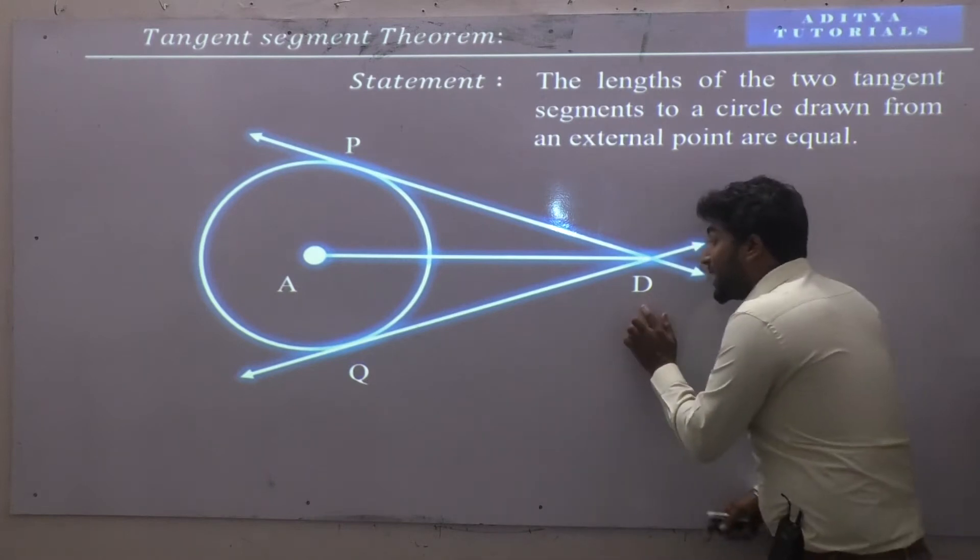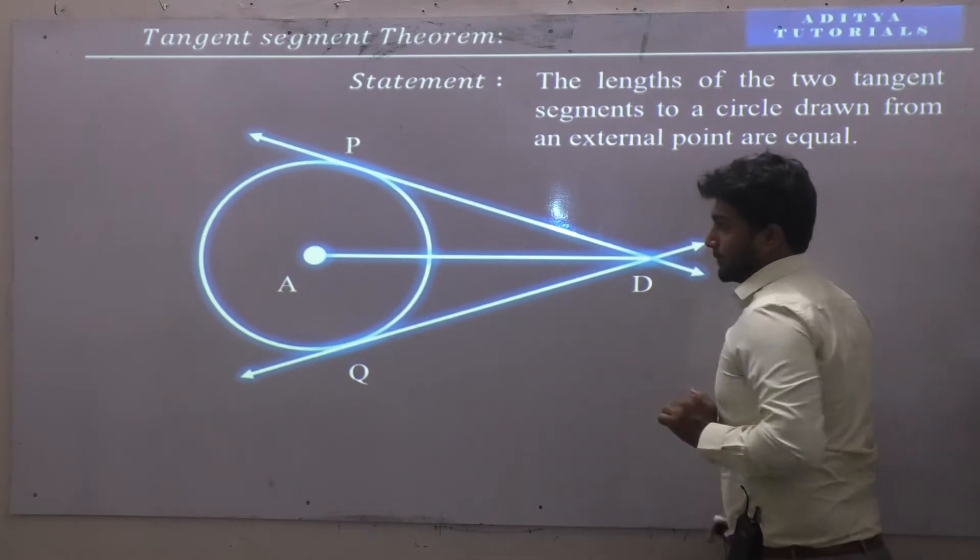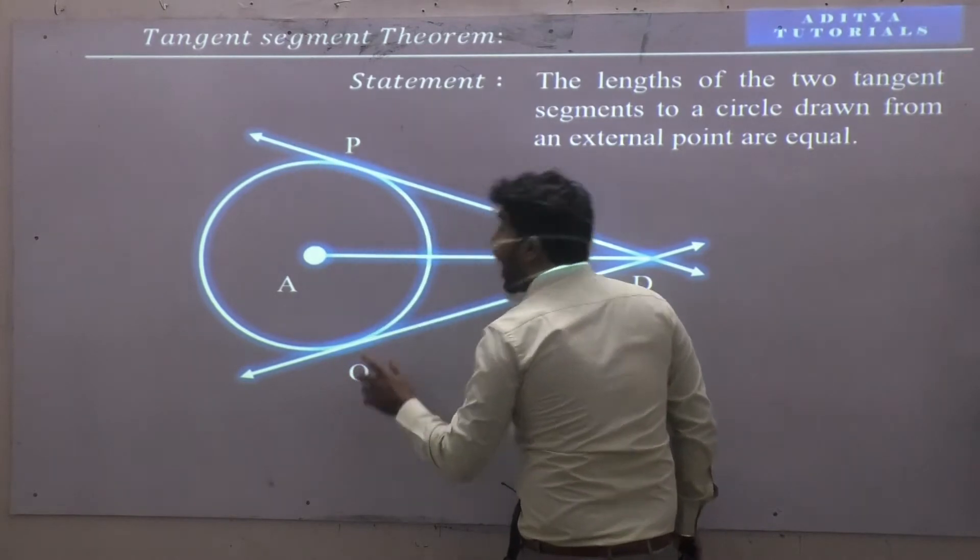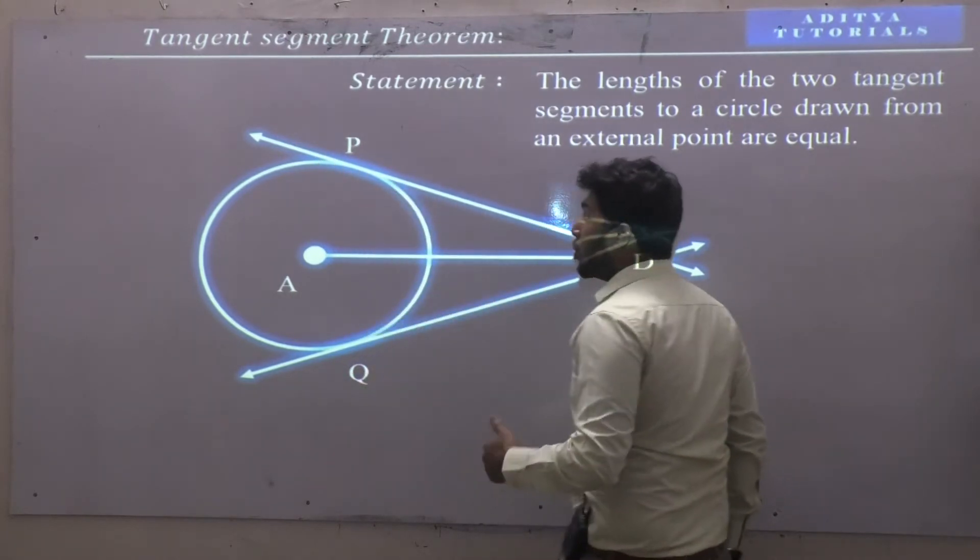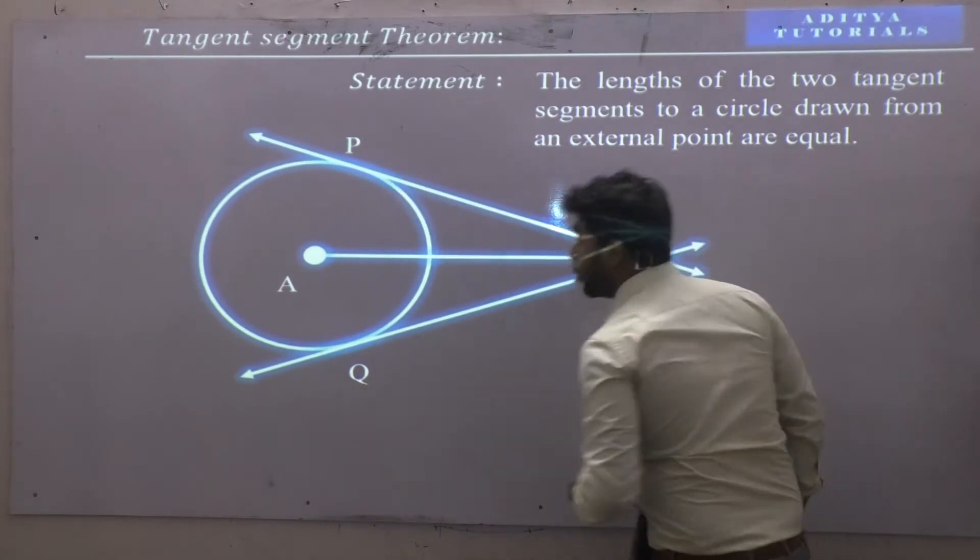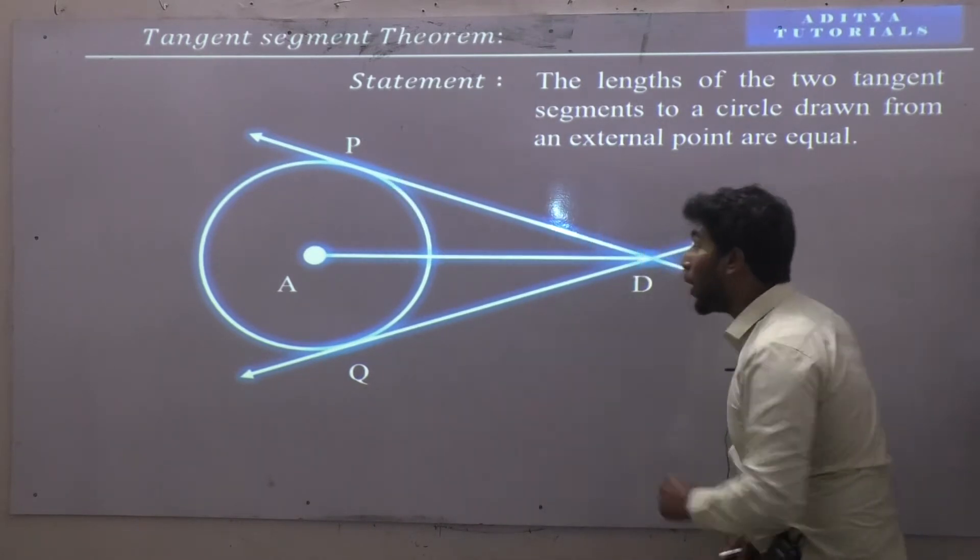D is the external point to a circle. Point P and point Q are the points of contact of tangent segments PD and DQ drawn from external point D.